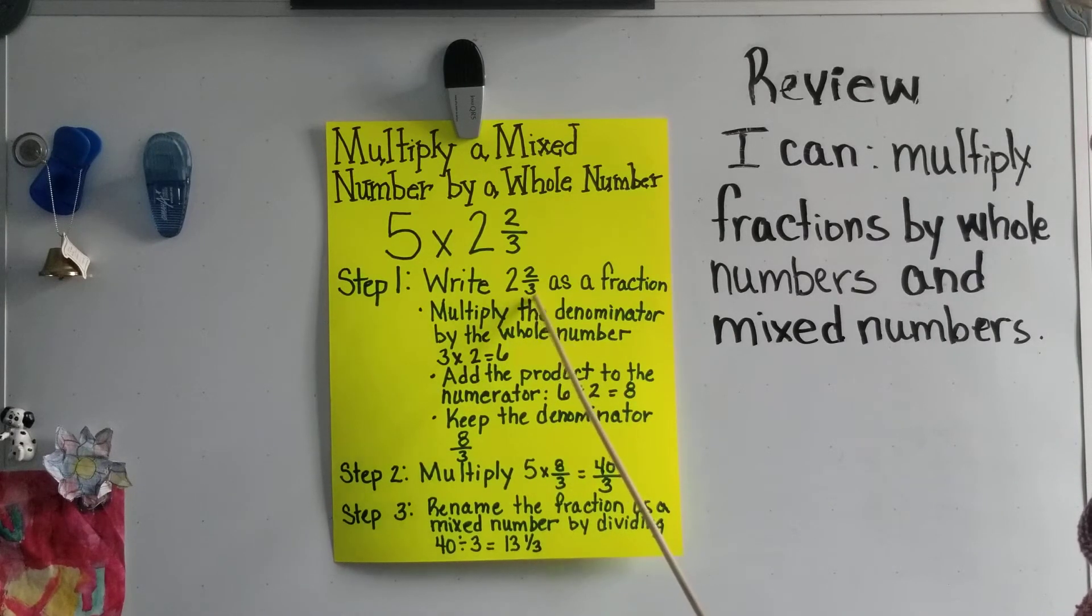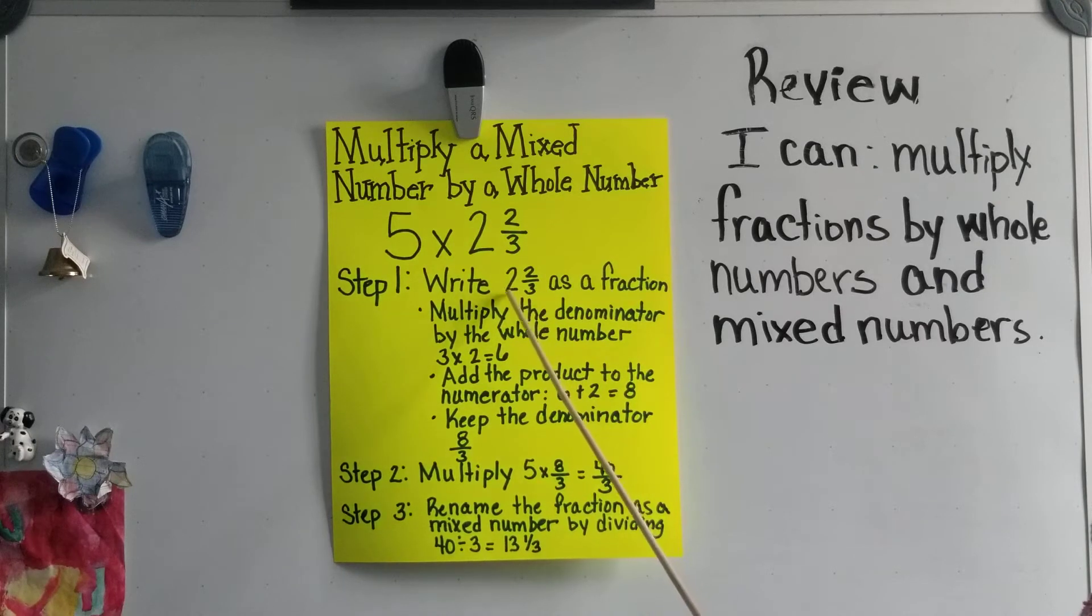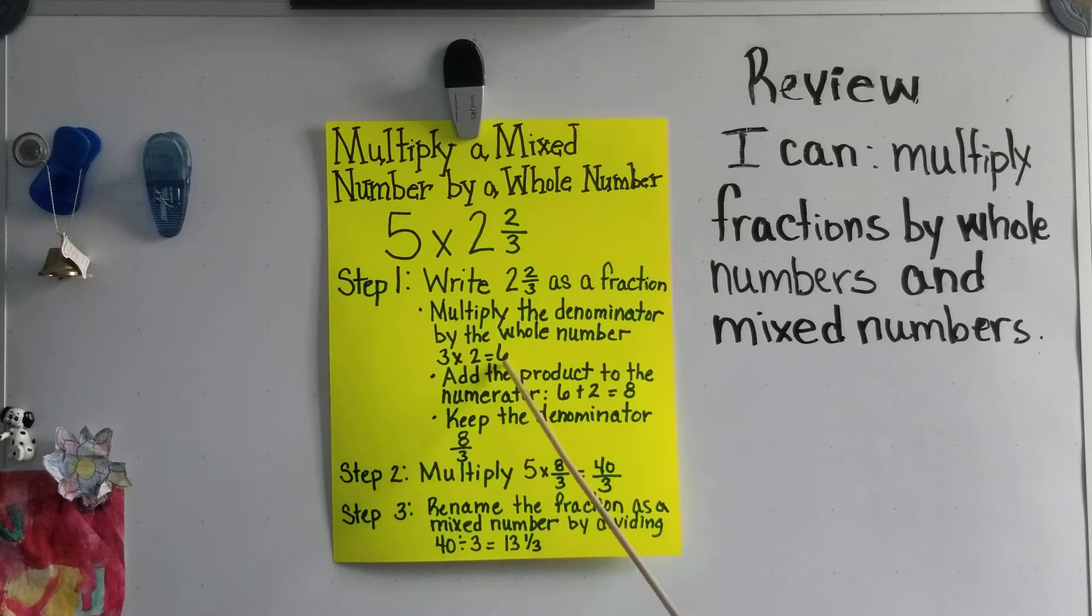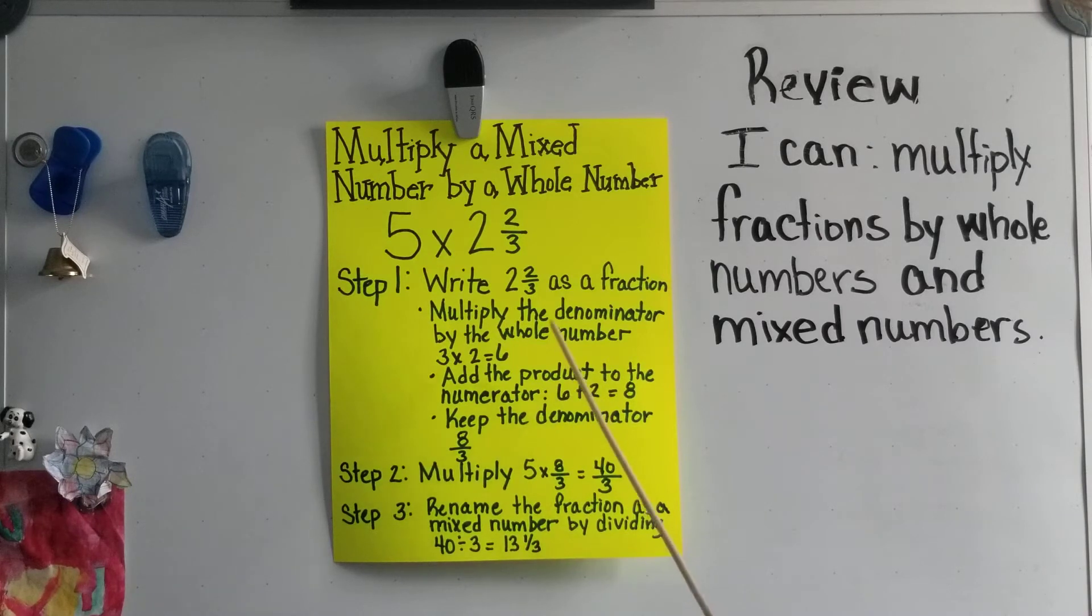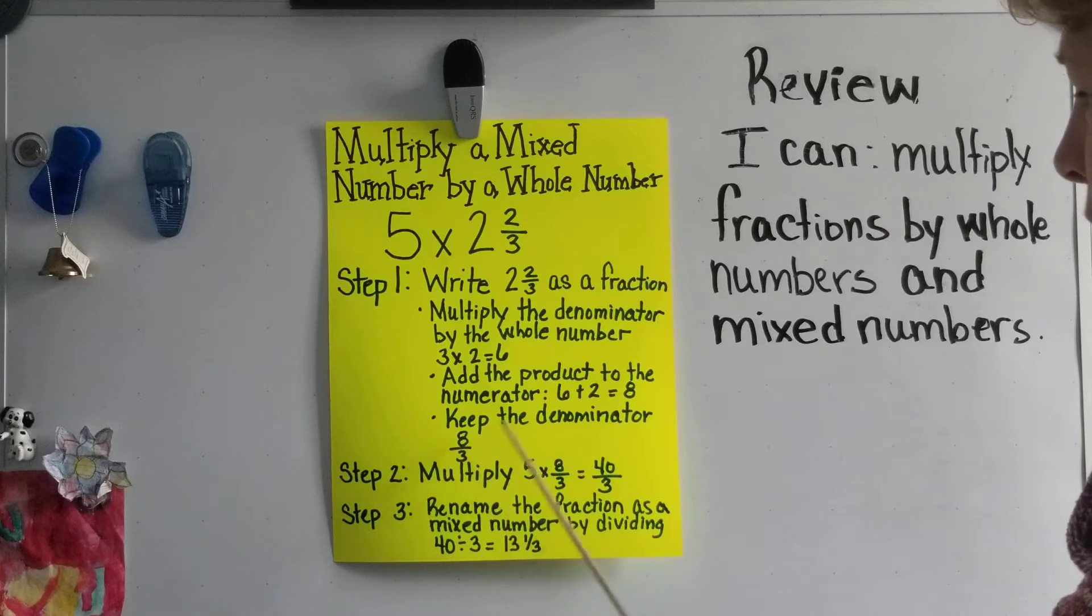So we take three, which is our denominator, times our whole number of two, and we get six. Then we add the product to the numerator. So our product of six plus two, our numerator, equals eight, and we keep the denominator.